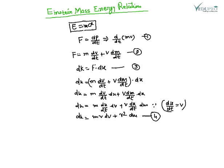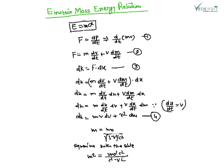We know that the variation of mass with velocity is m equals m₀ divided by the square root of (1 minus v²/c²). Squaring both sides and rearranging gives m²c² minus m²v² equals m₀²c².